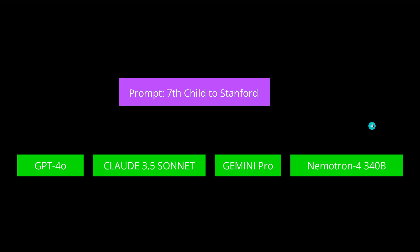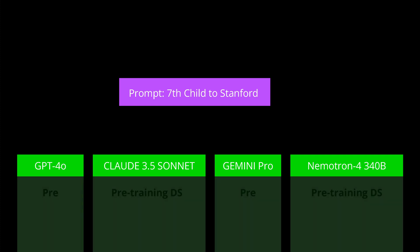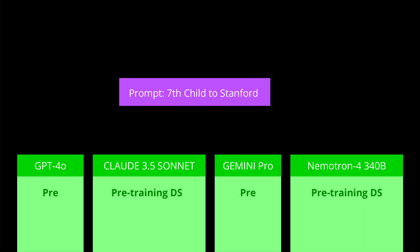So let's start. What was it? I gave you a prompt about how to send your seventh child to Stanford, and I asked here multiple LLMs — a vision language model like GPT-4 Omni, Claude 3 Sonnet, Gemini Pro, and other NVIDIA systems, huge systems — to simply answer four lines of text. And they all failed.